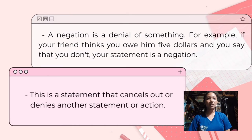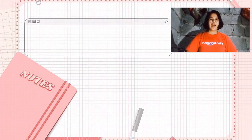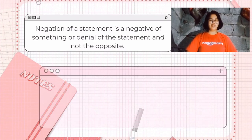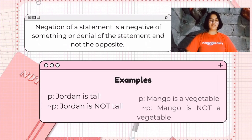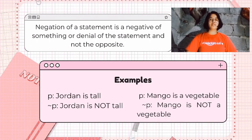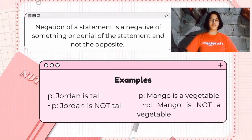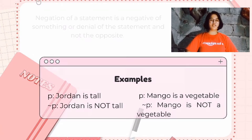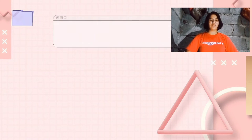A negation is a statement that cancels out or denies another statement. The negation of a statement is the negative of something. For example: 'Jordan is tall' — negation: 'Jordan is not tall.' 'Mango is a vegetable' — negation: 'Mango is not a vegetable.'